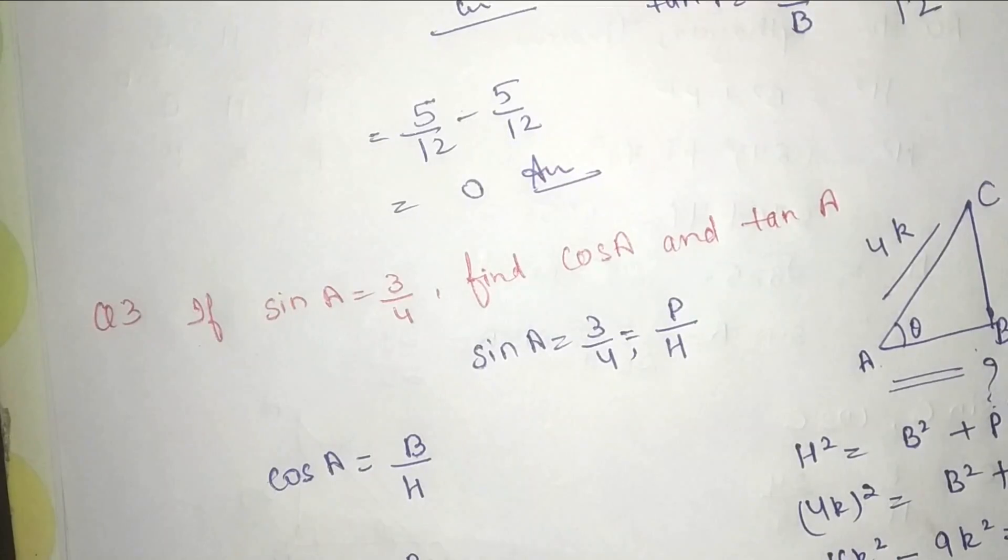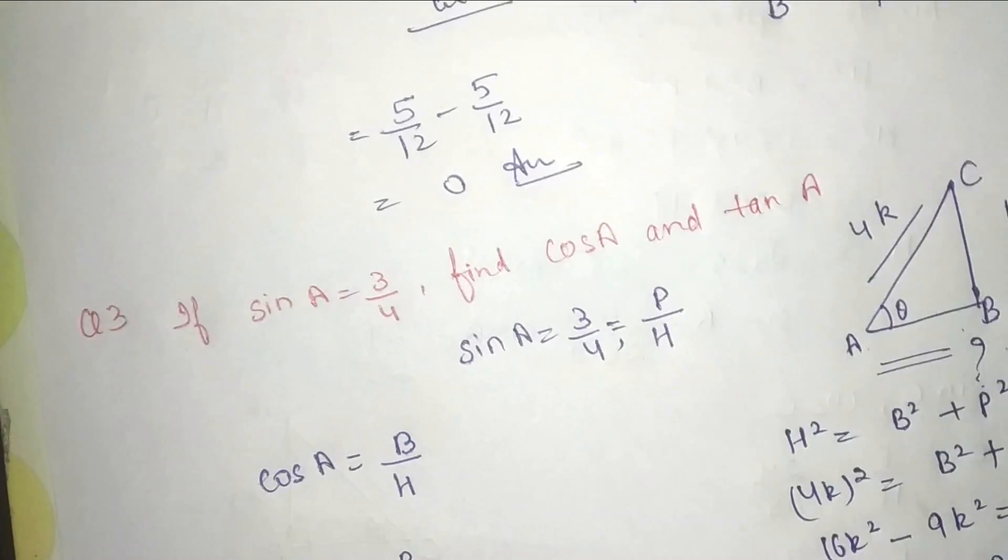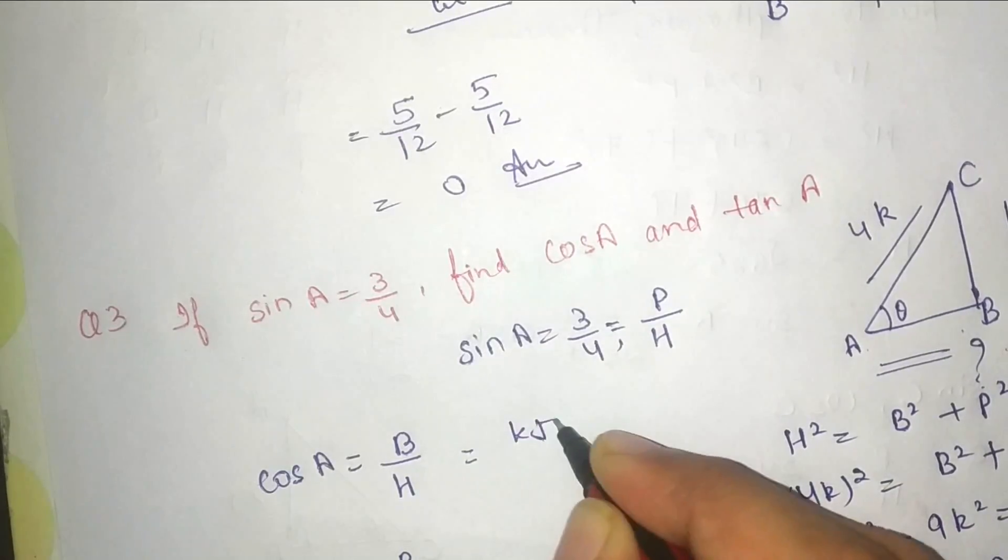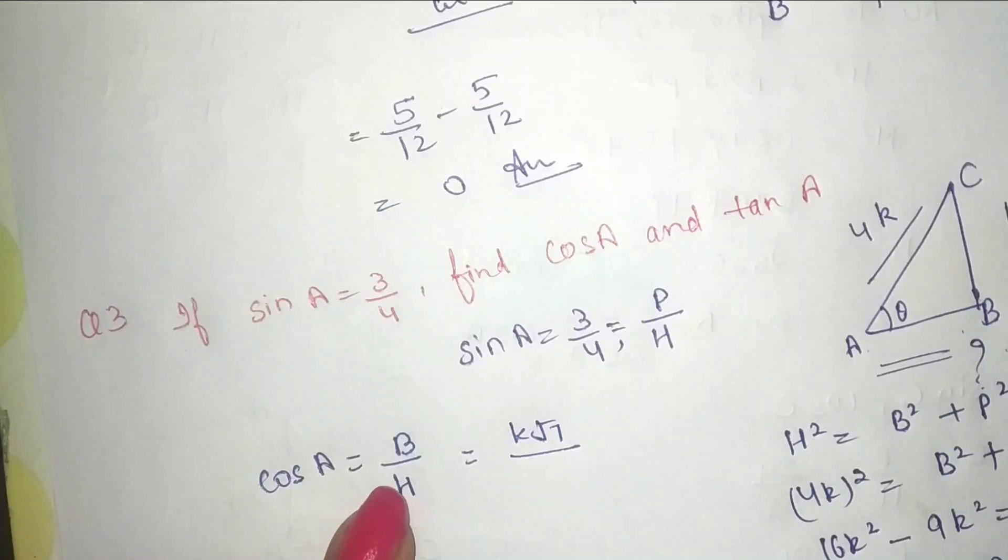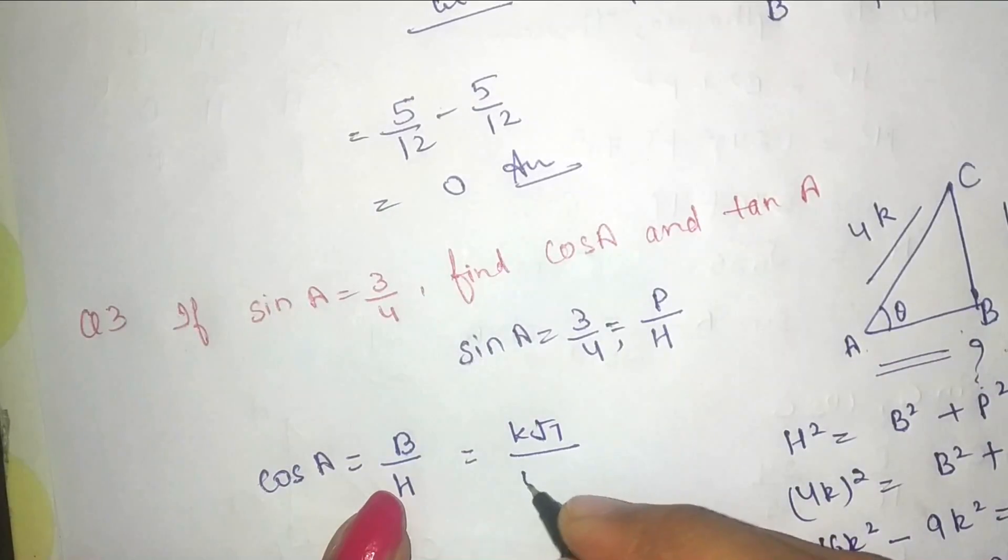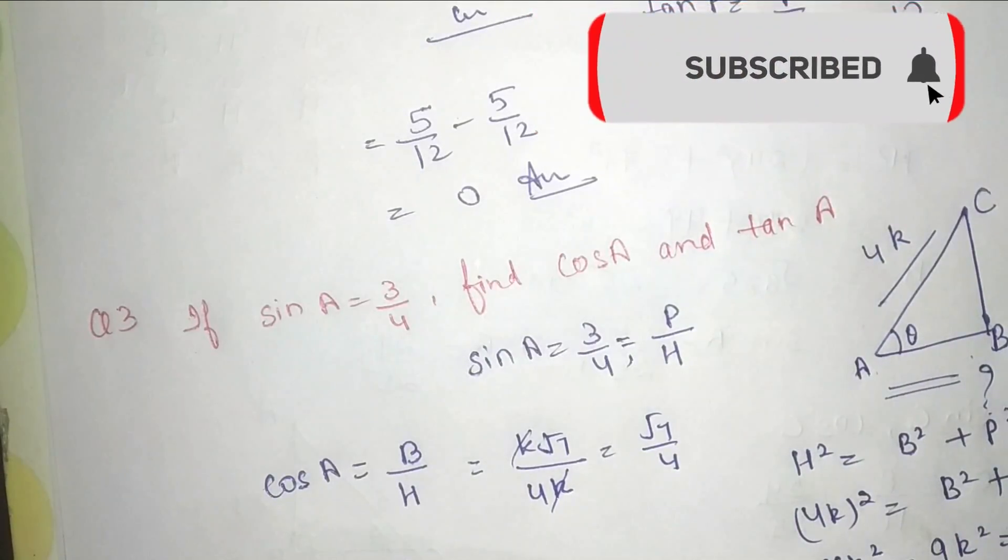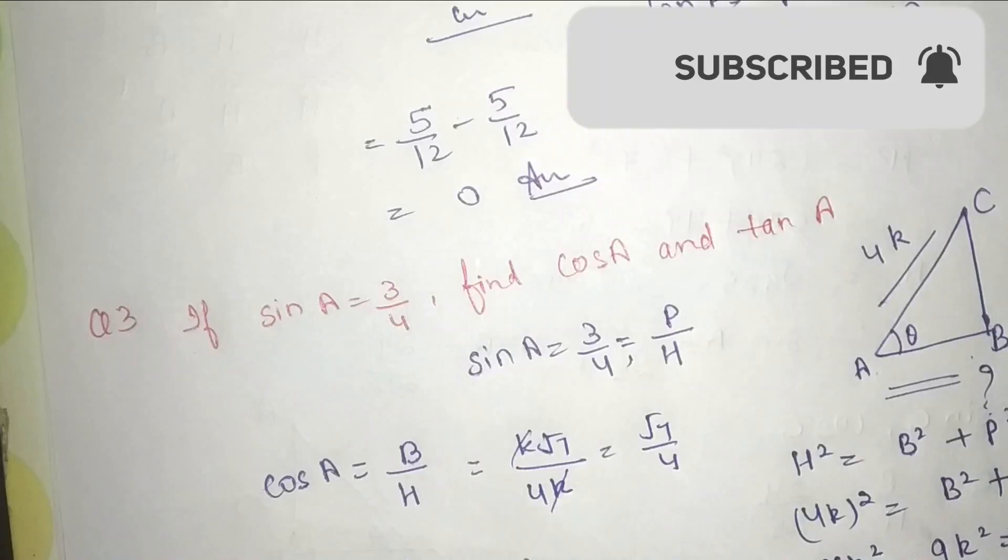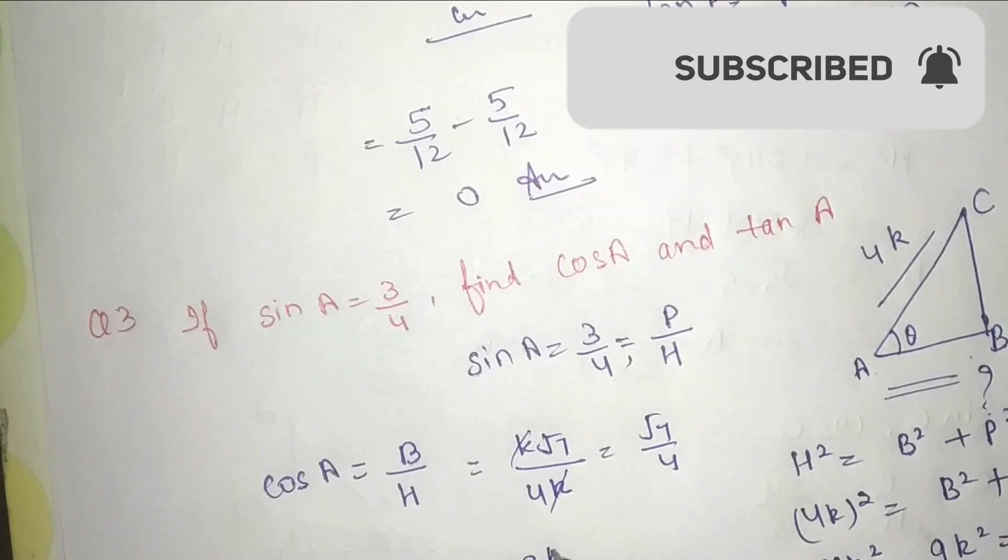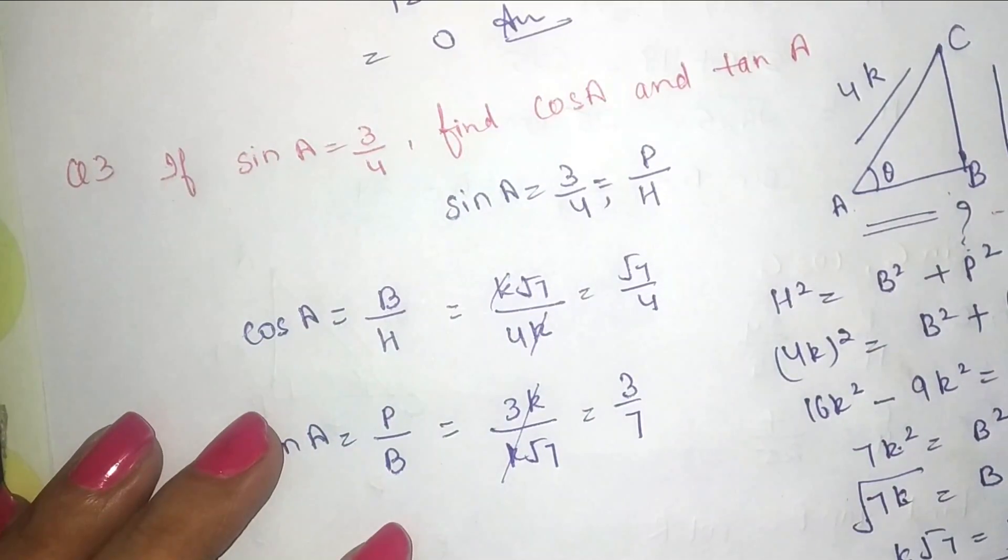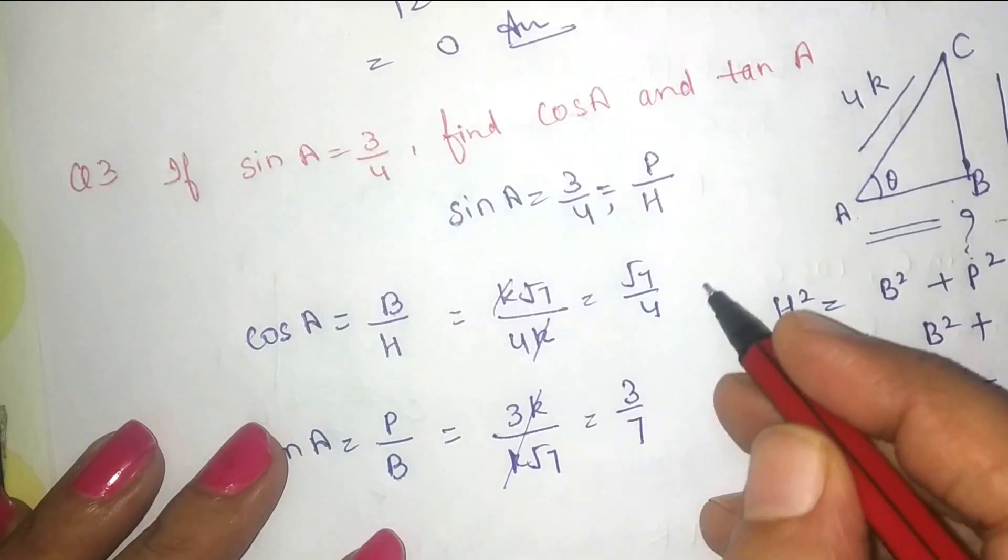So ismeh hamara base jo hai that is k root 7 and H is 4k. So k cancel ho gaya, it is root 7 upon 4. Tan A, P ki value hai 3k, base is k root 7, so k cancel ho jayega, so it will be 3 upon root 7.